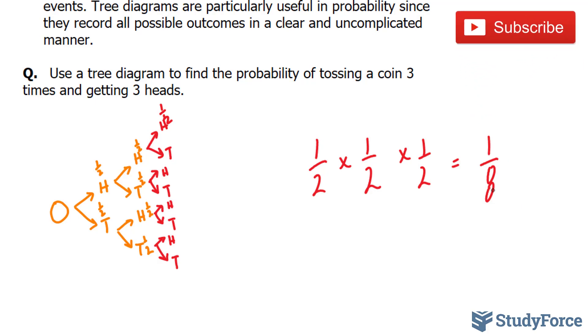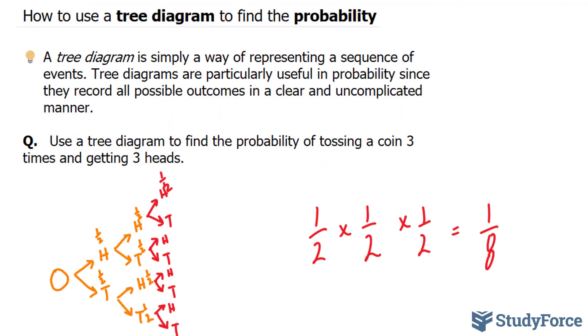And the same applies if you want to toss tails three times in a row. There is a 1 in 8 chance. So there you have it. That is how to use a tree diagram to find the probability.